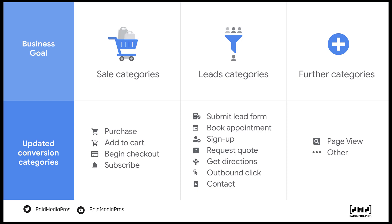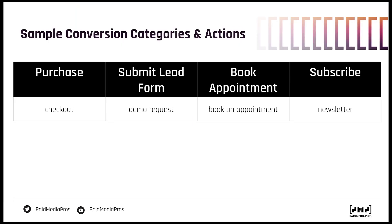Within the sales category, you have purchases, add to cart, begin checkout, and subscribe. The leads category has submit a lead form, request a quote, contact, and a handful of other things. The further categories are not nearly as useful — I don't think as many people are using them. Purchase or submit a lead form might sound like conversion actions, but those are actually conversion categories. So a purchase category might have checkout as the specific conversion action, or a demo request as your conversion action within the submit lead form category. Effectively, we've added an additional layer of organization into your conversion counting in Google Ads.